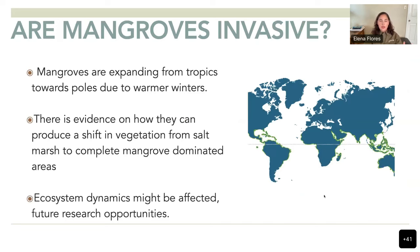Another trending research topic is whether mangroves are invasive, since they are expanding from the tropics toward the poles due to warmer winters. For example, the Corpus Christi freeze event in 2018 wiped out all the mangroves there — but probably 10 to 15 years ago we didn't even have mangroves in Corpus. Mangroves are now expanding farther north and south as winters get warmer.